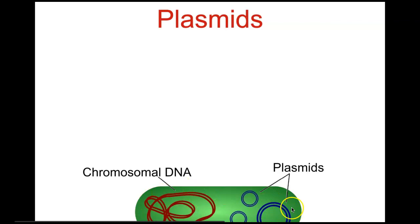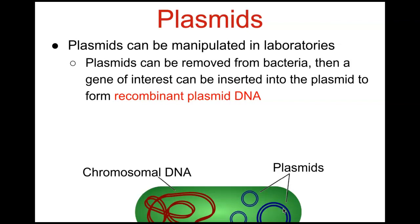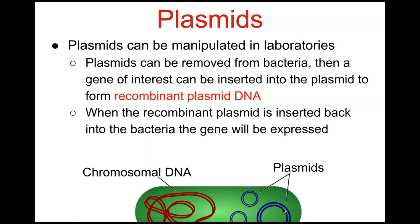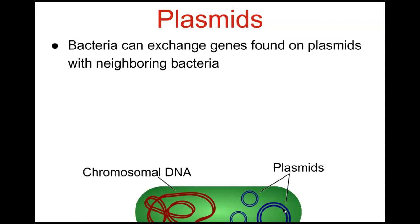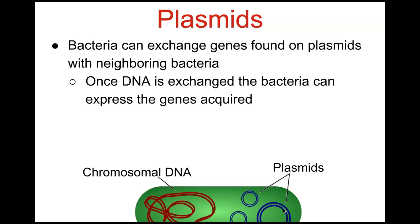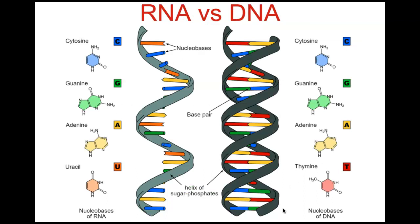You can see in the diagram chromosomal DNA versus plasmids — these circular DNA molecules. Plasmids can be manipulated in laboratories: plasmids can be removed from bacteria, a gene of interest can be inserted to form recombinant plasmid DNA, and when the recombinant plasmid is inserted back into bacteria, that gene will be expressed phenotypically. Bacteria can also exchange genes found on plasmids with neighboring bacteria, allowing them to express acquired genes — this contributes to the rapid evolution of bacteria and antibiotic resistance.